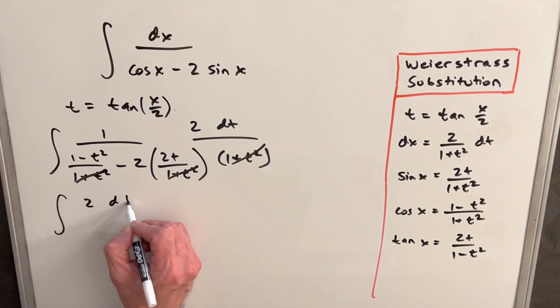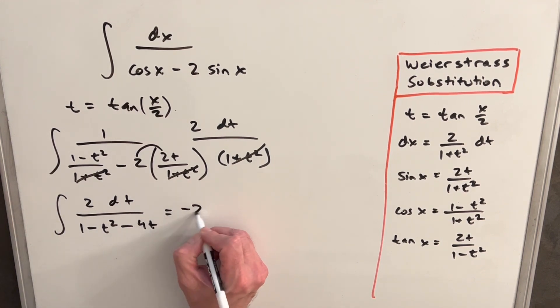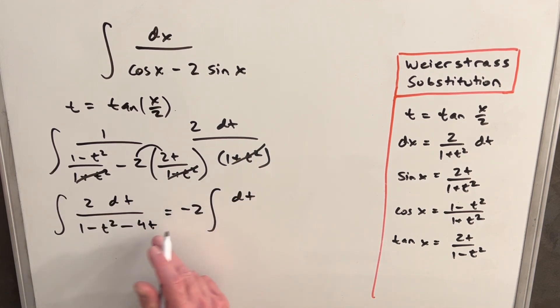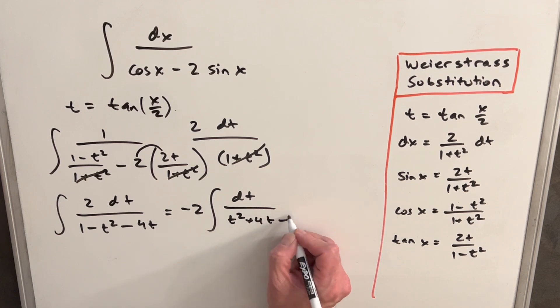Rewriting this, we're going to have our 2 dt in the numerator. We'll have our 1 minus t squared multiplying this, and we're going to have minus 4t. Then I can factor out a minus 2, the 2 from the numerator. But we'll have a minus just to flip the signs in the denominator. So this will give us t squared plus 4t minus 1.